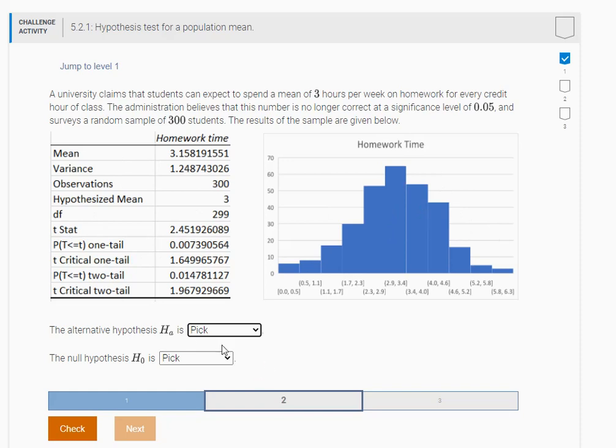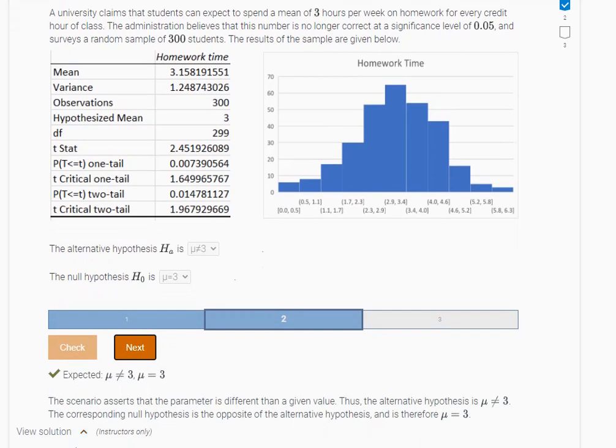They think it is no longer three hours. So we want to investigate their claim that it is not three hours anymore. So what would the null hypothesis be? You need to have some base assumption to start with. If you're testing to show evidence that it's no longer equal to three hours per week for every credit hour of class, you'd start with the null hypothesis that it is three hours. Let's start with the assumption that it is three and look for evidence to show that it is not three. And look, we got it right there.